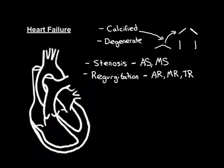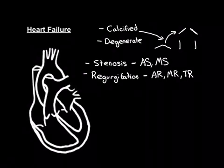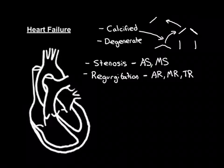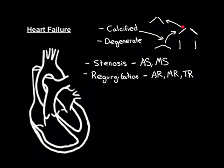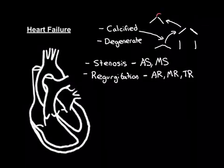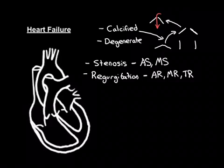How does regurgitation occur? There are two possibilities. Maybe the valve can no longer close completely — if calcification is so severe that it immobilizes the leaflets so much that they can only move a tiny bit, they can't actually close completely anymore. That leaves gaps open during diastole, allowing blood to regurgitate backwards. So calcification can lead to regurgitation.